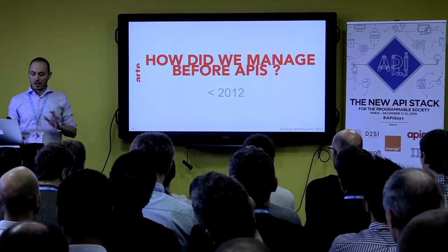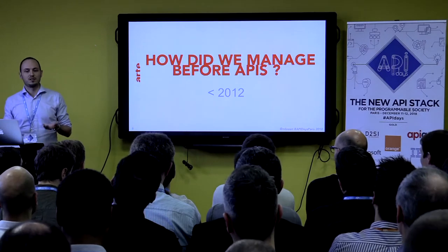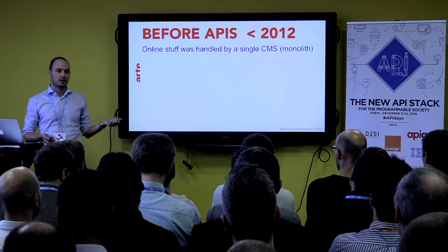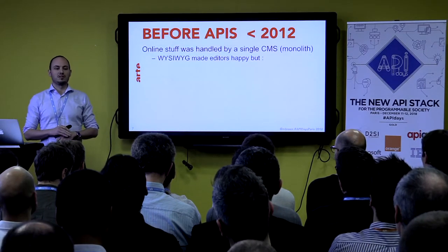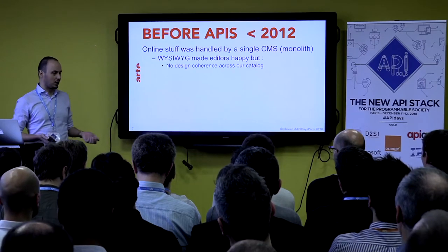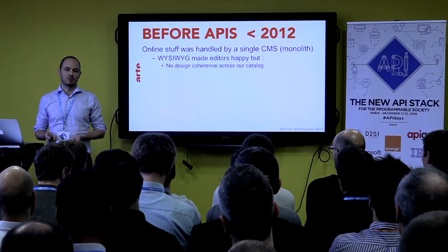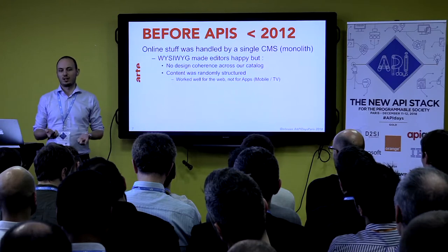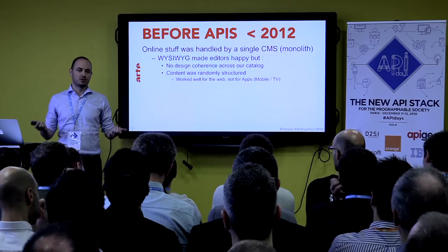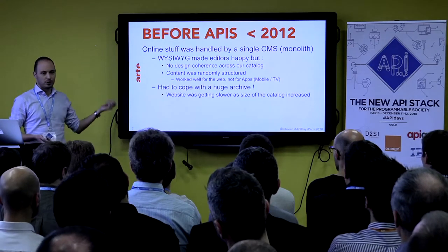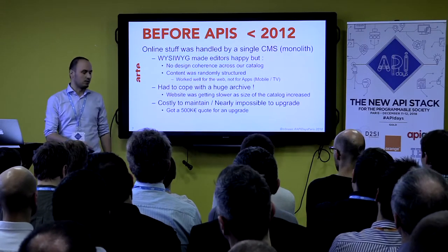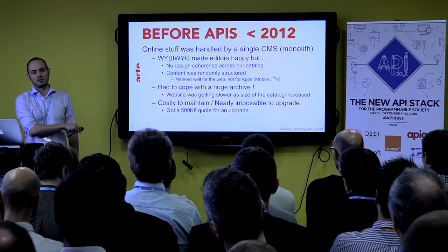Let's take a moment to reflect on how things worked before APIs. Before APIs, we used a giant CMS. This made everyone really happy because they could edit any web page, but it just didn't work out. We had no design coherence whatsoever. Our content was randomly structured, so it worked well for web, but for mobile apps and TV apps, we couldn't reuse the data. We had to cope with a huge archive, so the site was getting slower and slower over time, and it was just really costly and impossible to maintain.